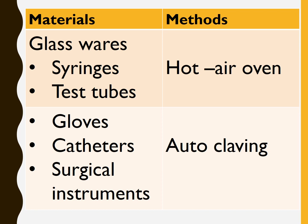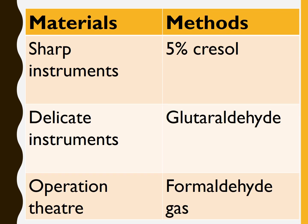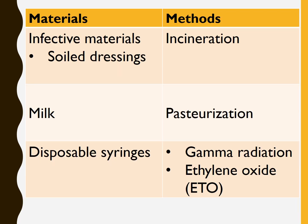Hot air oven is used for sterilizing glassware, especially syringes and test tubes. Autoclaving is used for sterilizing gloves, catheters, and surgical instruments. 5% Cresol is used for sterilizing sharp instruments. Delicate instruments such as endoscopes are sterilized by glutaraldehyde. Formaldehyde gas is used for sterilizing operation theaters. Incineration is used for infective materials such as soiled dressings. Pasteurization is used for sterilizing milk. Gamma radiation and ethylene oxide are used for sterilizing disposable syringes — please remember this.